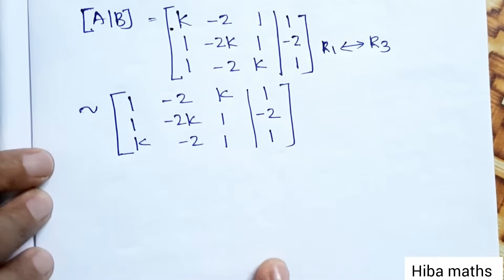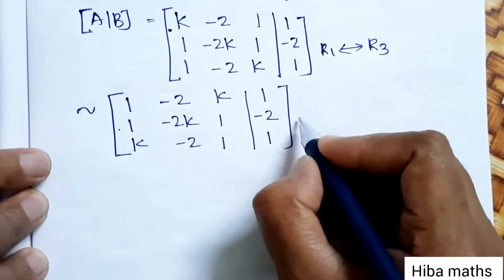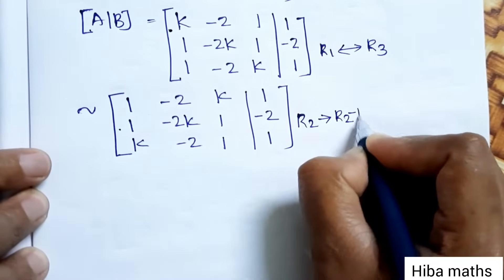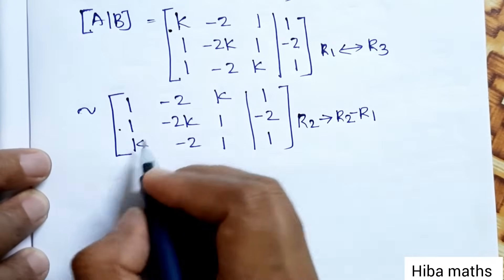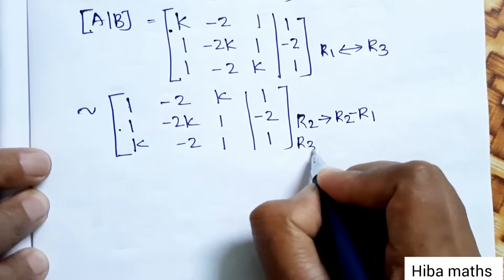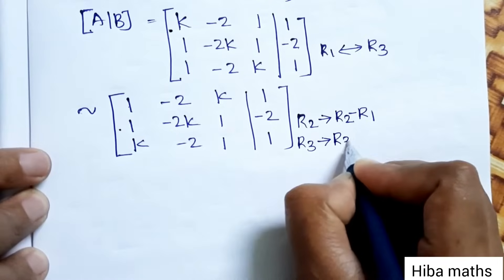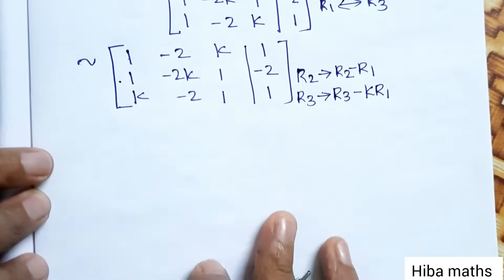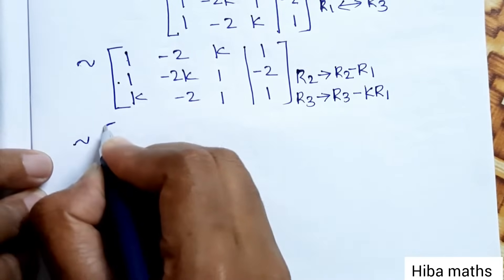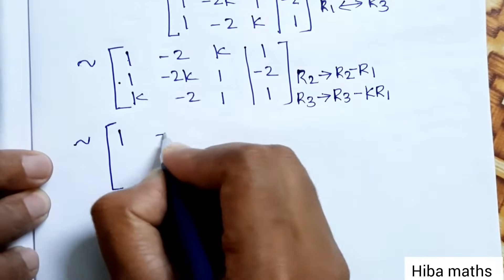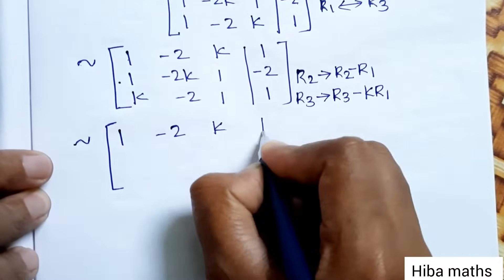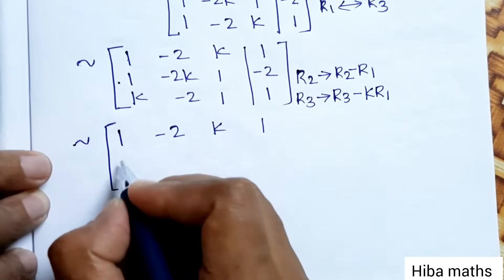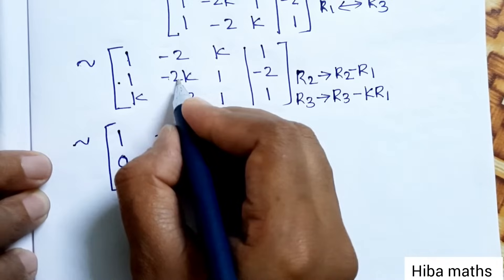Now we solve using row operations. Since there is a 1 in the first column, we apply R2 → R2 - R1 and R3 → R3 - k·R1. Computing the second row: 0, -2k+2, 1-k, -3. And the third row involves subtracting k times Row 1.